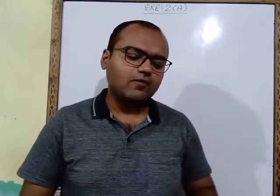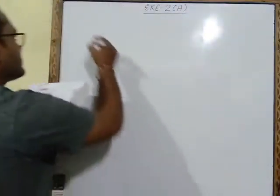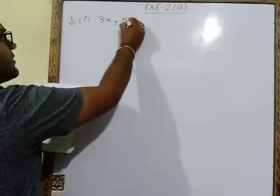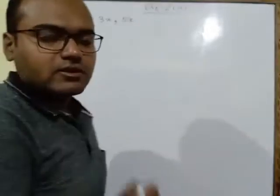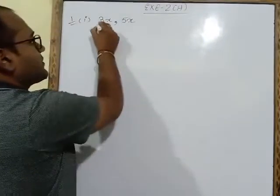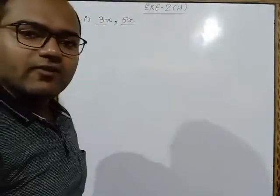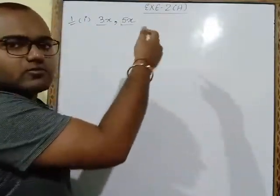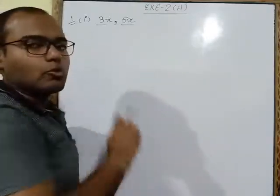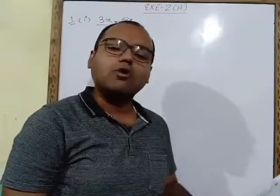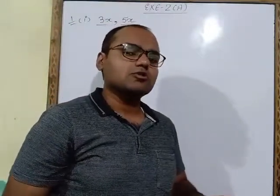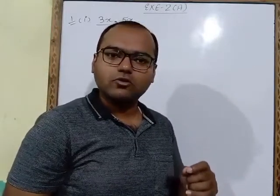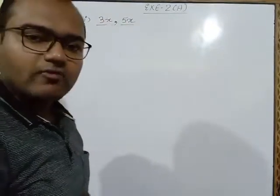The first question is to add the following monomials. The first part is 3x and 5x. These are single terms — this is one term, this is also one term. That's why we call them monomials. Monomial means those algebraic expressions in which the number of terms is 1. So we have to add these two monomials.